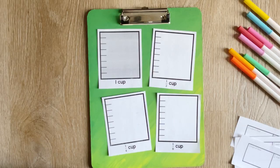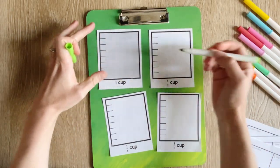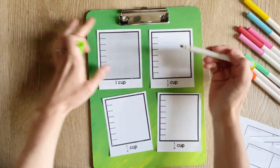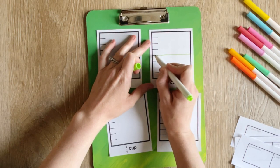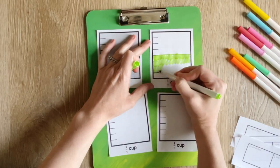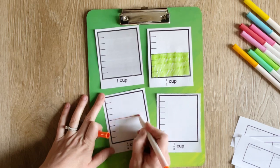So the first thing we want students to do is to color in these figures to represent what's going on. So we have one cup, and then they'll shade in to show half a cup, and one-fourth a cup, and then one-eighth of a cup.